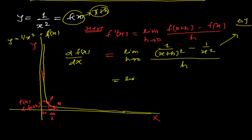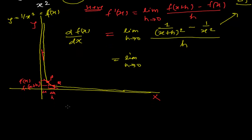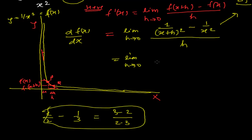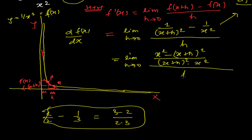Again, limit when h tends to 0. Just as with fractions like 1/2 minus 1/3, we take the LCM — writing it as (3 minus 2) over 2 times 3. We do the same here. So it becomes: x squared minus (x+h) whole squared, divided by (x+h)² times x², and the whole divided by h.